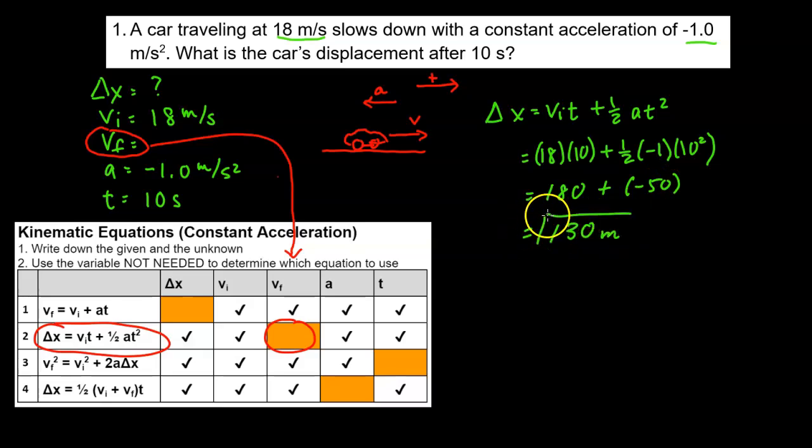We're going to box our answer. This car, while slowing down over 10 seconds, will travel 130 meters.